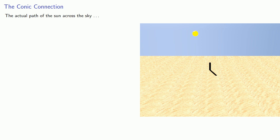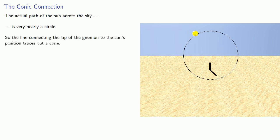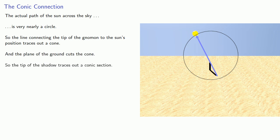The actual path of the sun across the sky is very nearly a circle, so the line connecting the tip of the gnomon to the sun's position traces out a cone. That comes from Apollonius' reinvention of the conic sections, and the plane of the ground cuts the cone, so the tip of the shadow traces out a conic section.